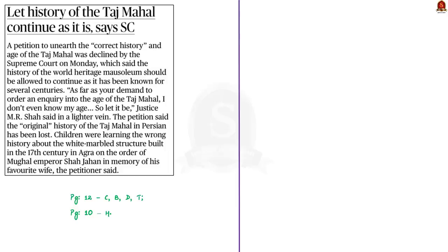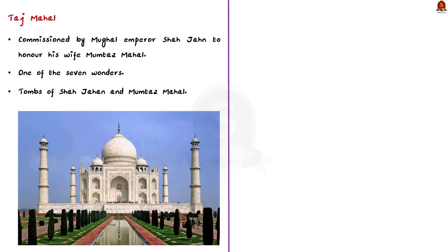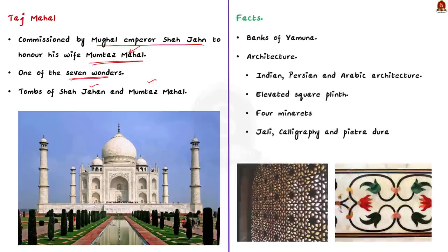Have a look at this news article about a petition and the age of Taj Mahal. The Supreme Court dismissed the petition saying that let the history of Taj Mahal continue as it is. In this context, let us see some important facts about Taj Mahal. As we all know, Taj Mahal was built by Mughal Emperor Shahjahan to honor his wife Mumtaz Mahal. It is one of the seven wonders of the world, and it houses the tomb of both Mumtaz Mahal and Shahjahan. It is located in Agra on the banks of the Yamuna. The mausoleum architecture takes inspiration from Indian, Persian and Arabic architecture.